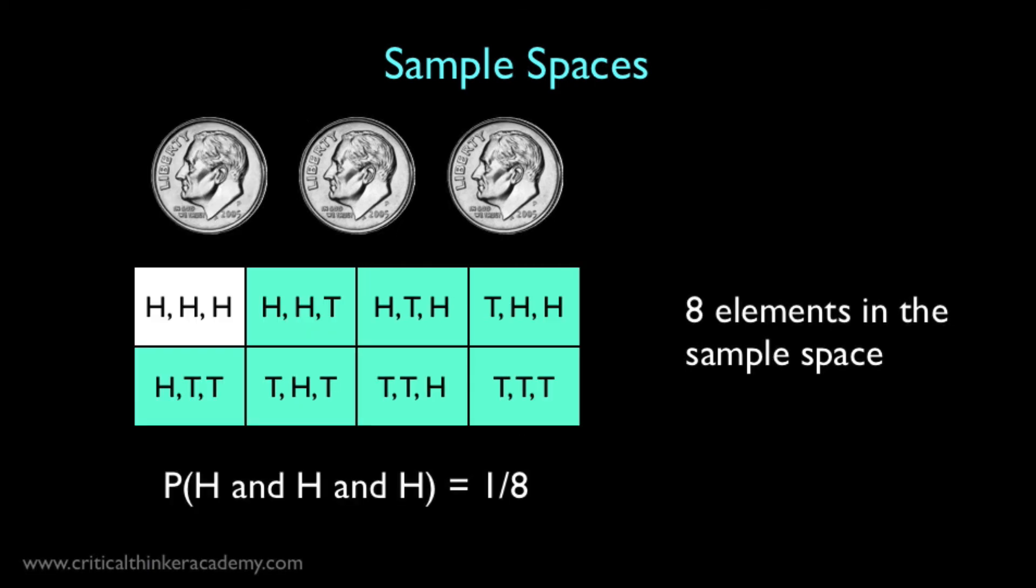Here's the sample space for three coin tosses. There are eight possible combinations of heads and tails, and the probability of landing three heads is just one in eight.